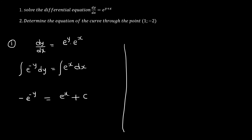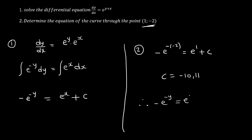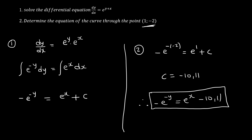Part two asks for the equation of the curve through a given point. 'Equation of the curve' means find the particular solution — substitute the given x and y values into −e^(−y) = e^x + c to solve for c. Substituting gives −e^(−(−2)) = e^1 + c, so c ≈ −10.11. Therefore the equation of the curve is −e^(−y) = e^x − 10.11.